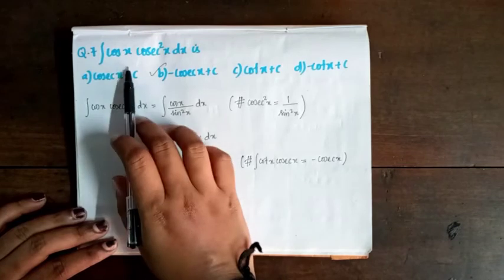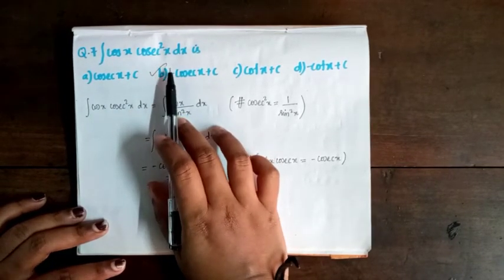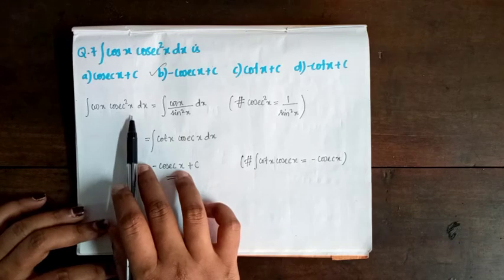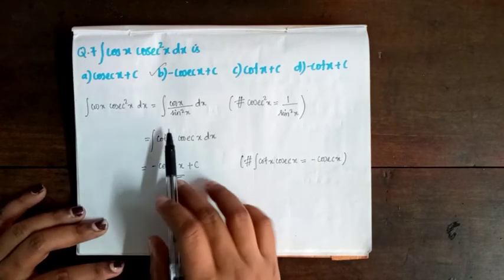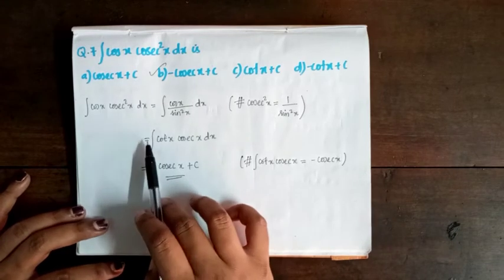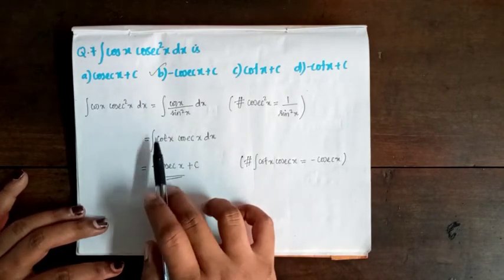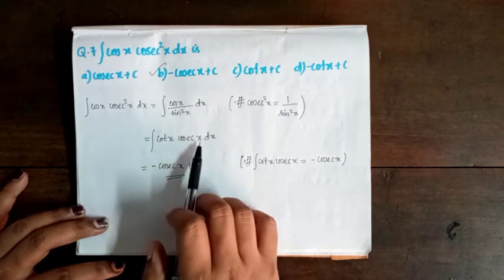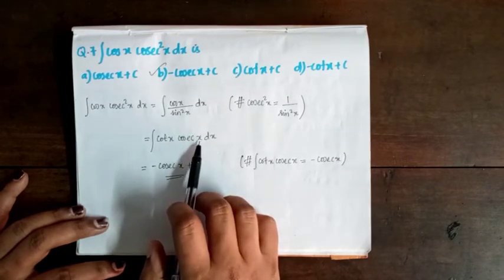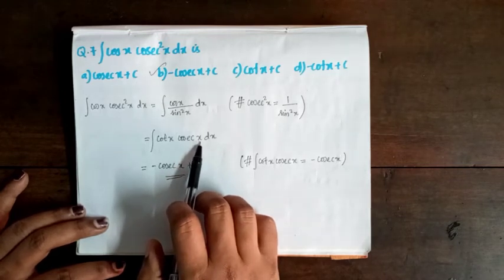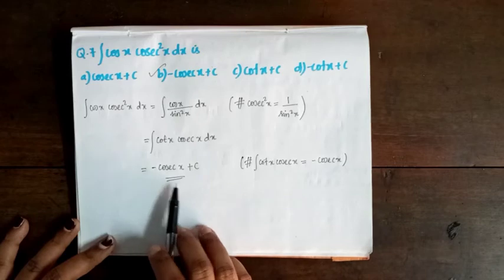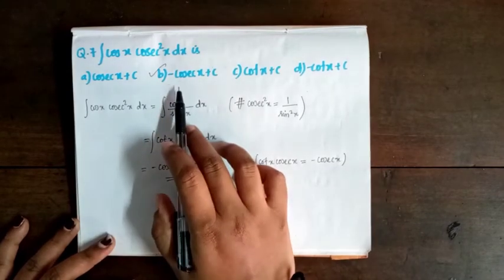Question 7: Integrate cos x times cosec²x dx. Since cosec²x equals 1/sin²x, we rewrite as integral of cos x / sin x dx, which equals integral of cot x times cosec x dx. Using the standard formula, this equals minus cosec x plus C. Option B is correct.